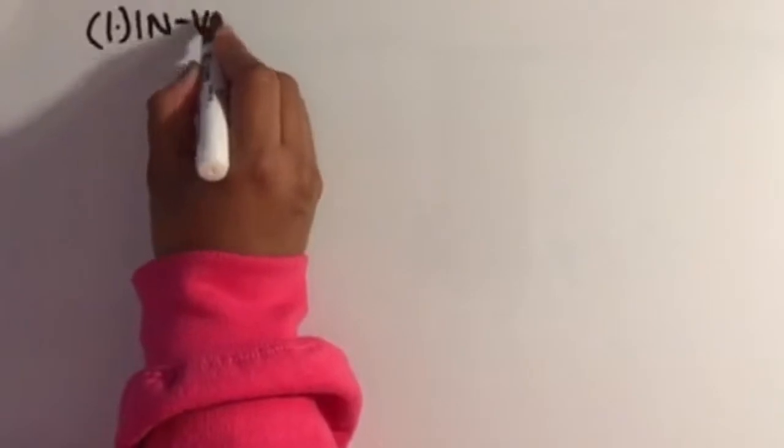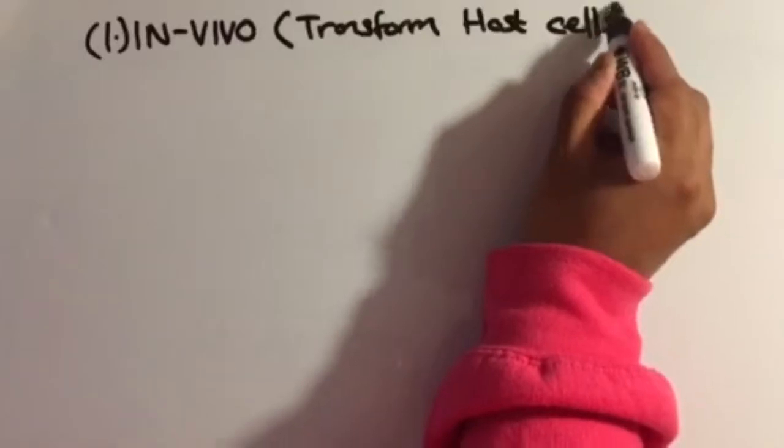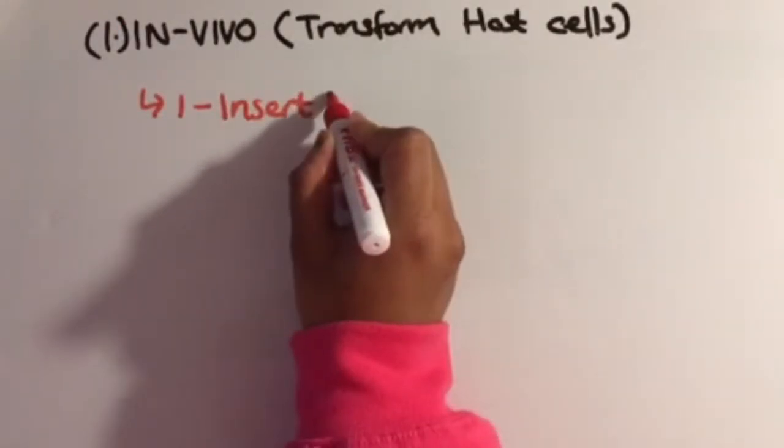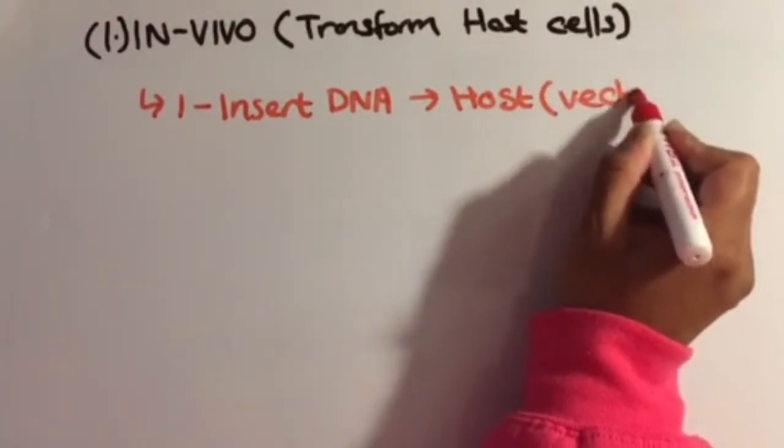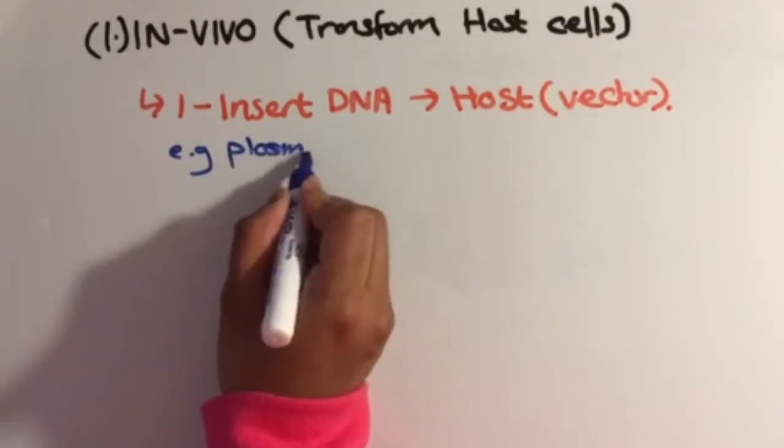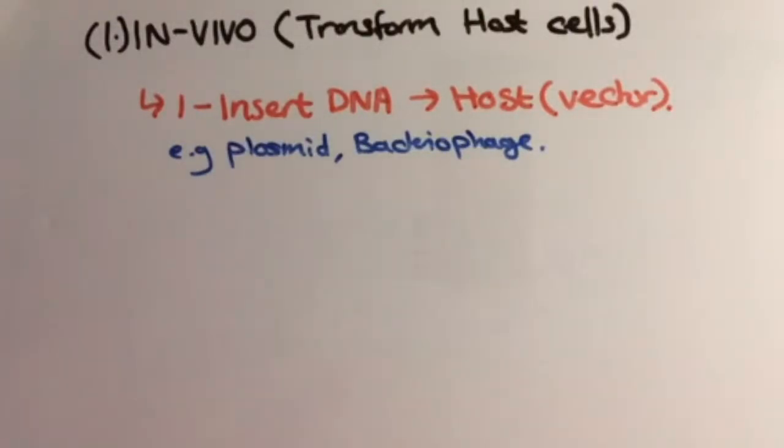Firstly, let's talk about in vivo. In vivo usually talks about transforming host cells. The first step is to insert the DNA fragment into a vector DNA. This could either be plasmids or small bacteriophages such as viruses that infect bacteria.